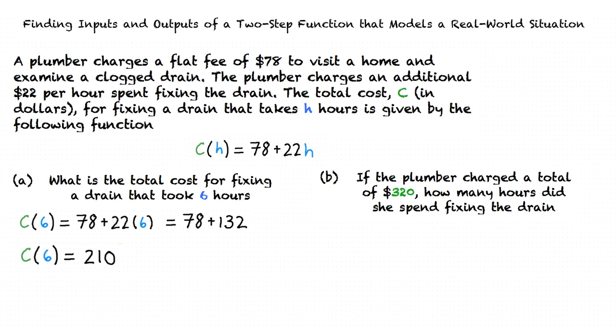To solve for the input of the function, we must set the function 78 + 22h equal to 320 and solve for h. Solving for h, we find that it took 11 hours to fix a drain that cost $320 to fix.